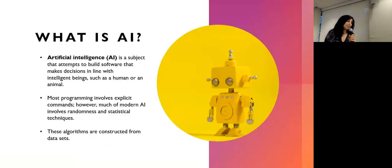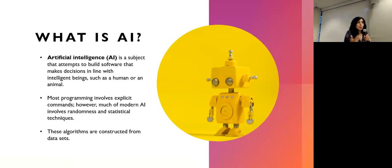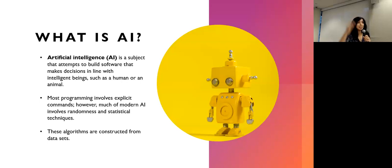So what is AI? AI is basically a subject or a topic where we build software that attempts to navigate novel environments in a way that's like an organism, an intelligent being, a human or an animal. Most of the time when you're talking about computer programs, you're talking about explicit commands — you tell the computer to do X, Y, and Z, and it does that. But modern AI is really much more based on statistics and randomness.